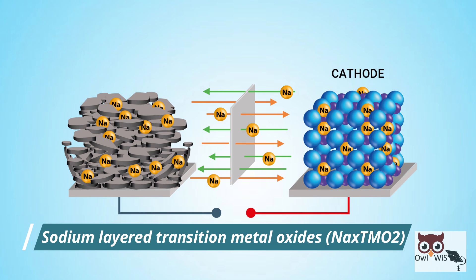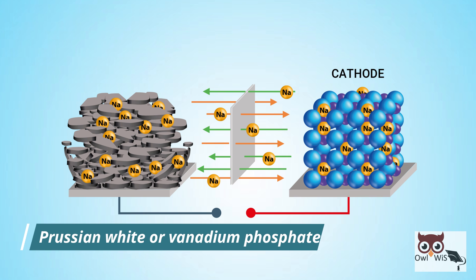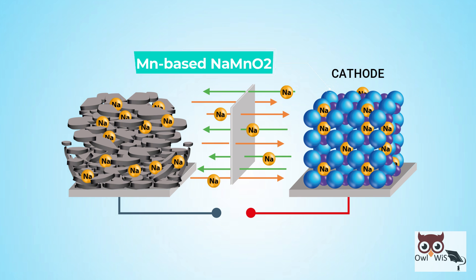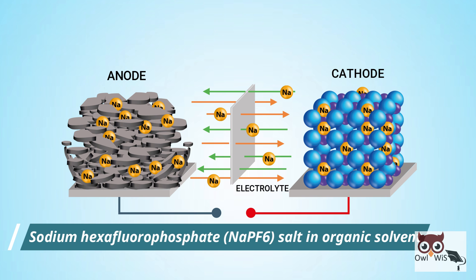Sodium ion battery cells use sodium layer transition metal oxides, Prussian white, or vanadium phosphate as cathode materials. Manganese-based sodium manganese oxide is one common type of cathode. Hard carbon is used as an anode, and an electrolyte made of sodium hexafluorophosphate salt in an organic solvent is used.